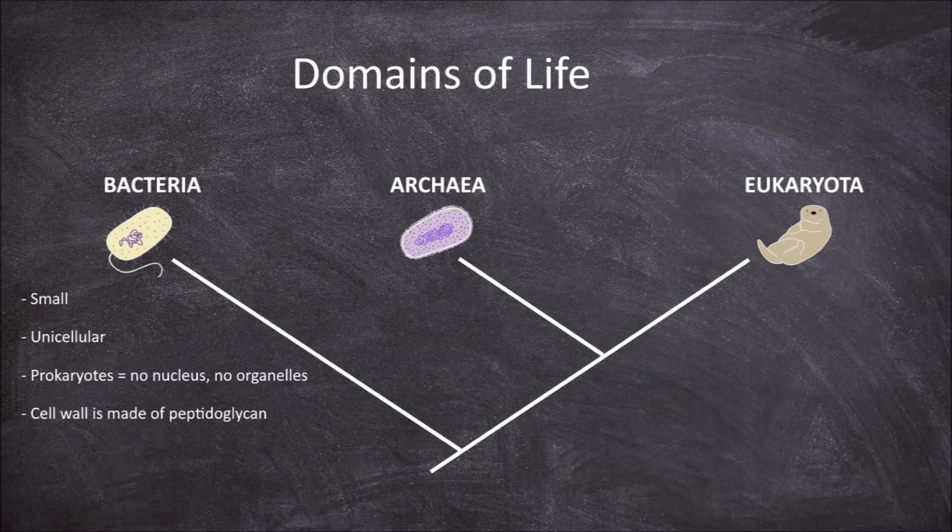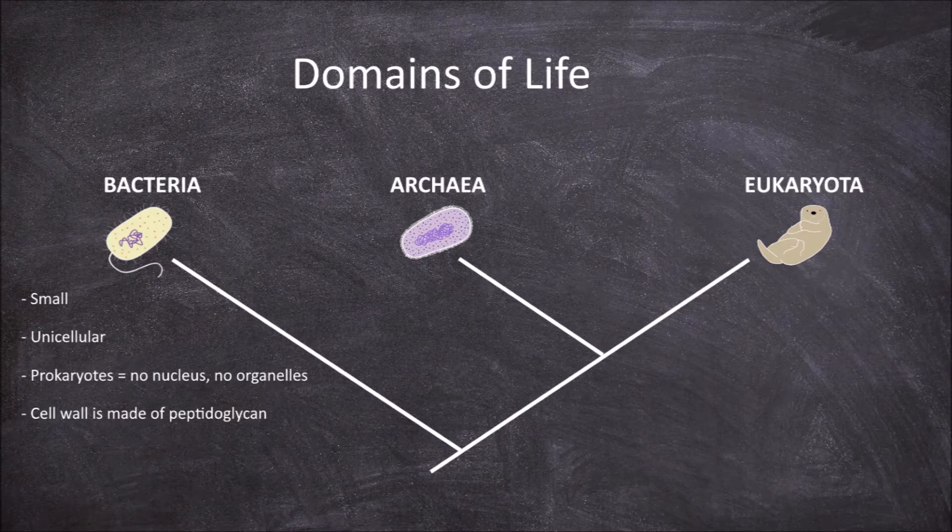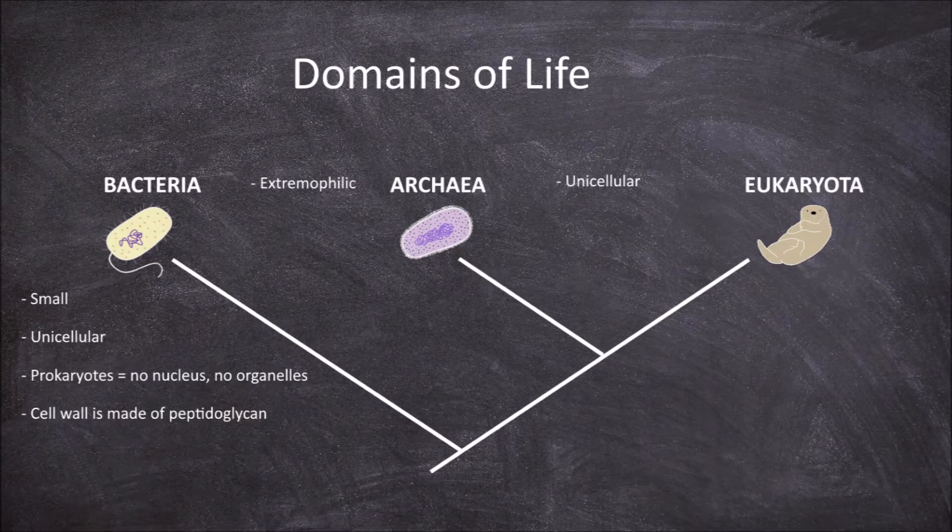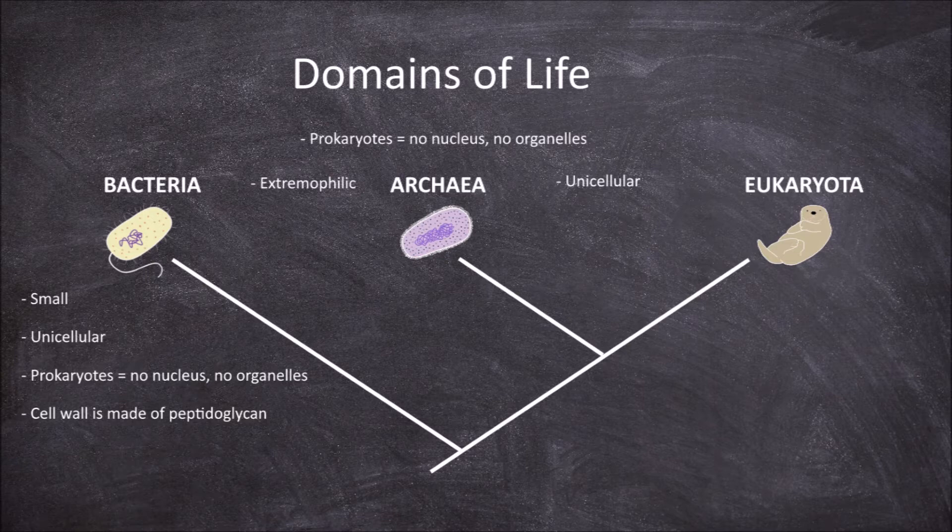The archaea consists of primarily extremophilic single-celled organisms. Like bacteria, they lack a nucleus and other membrane-bound organelles, differentiating it from the eukaryota. The main feature of this group is that they often live in extreme environments - they are extremophilic.